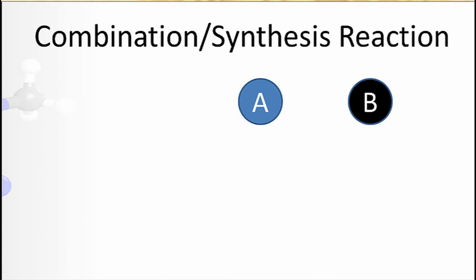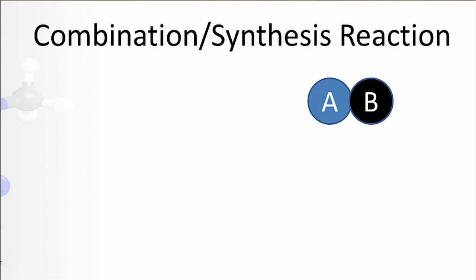So here we have substance A and substance B, the reactants, and when they react, we end up with substance AB, and that's a new substance, and it's going to have very different properties than either A or B.